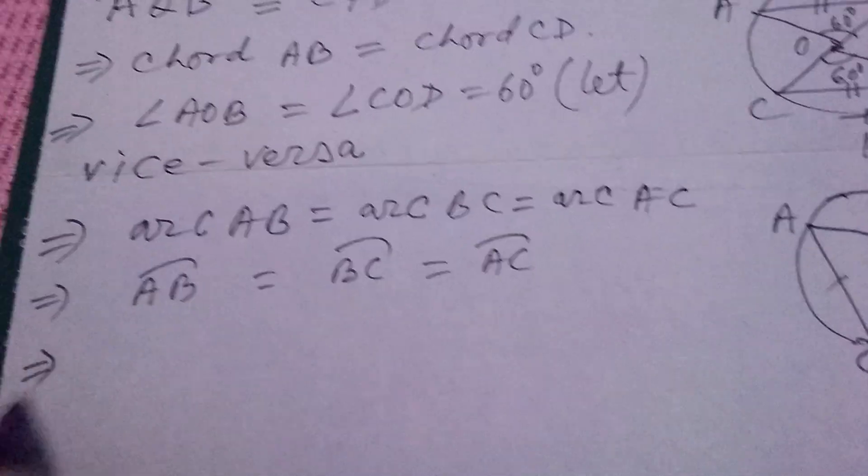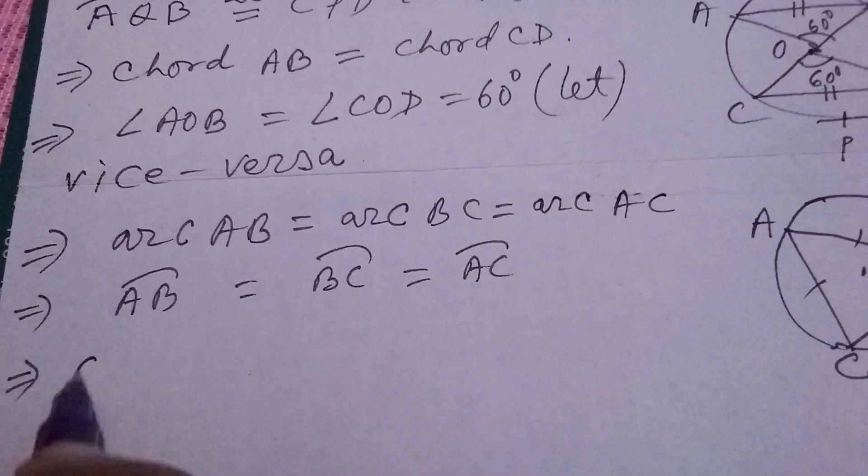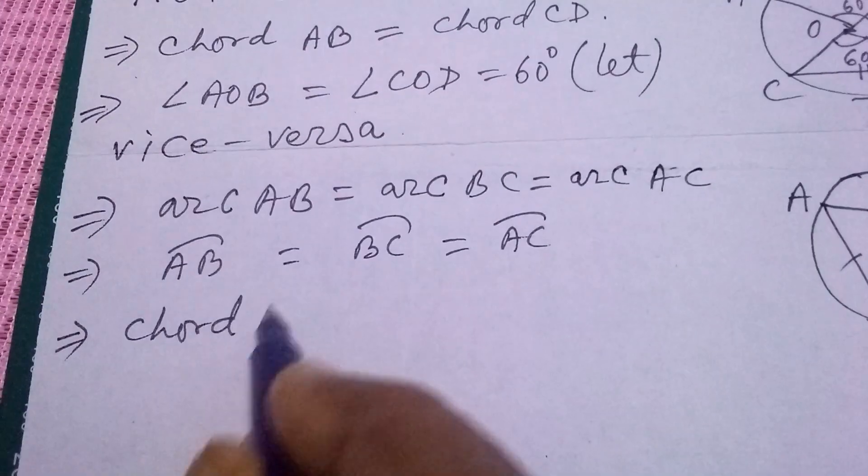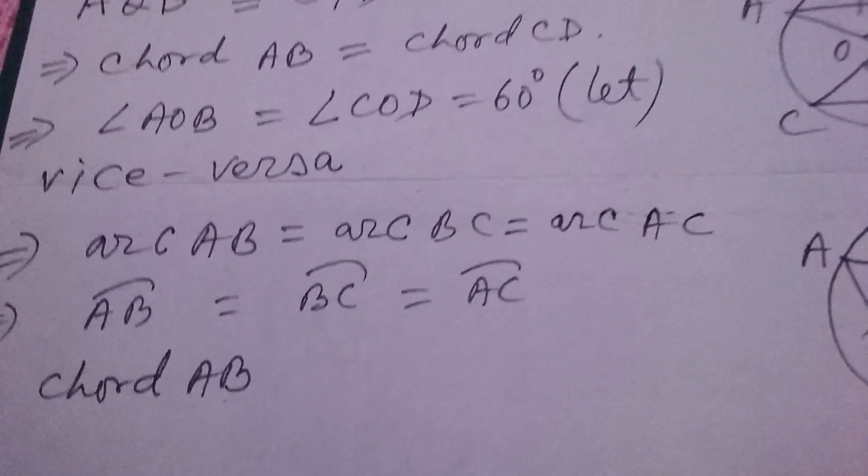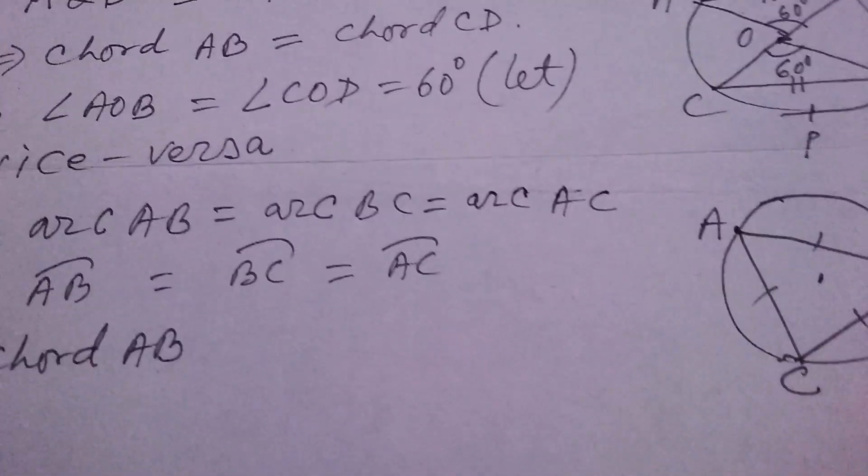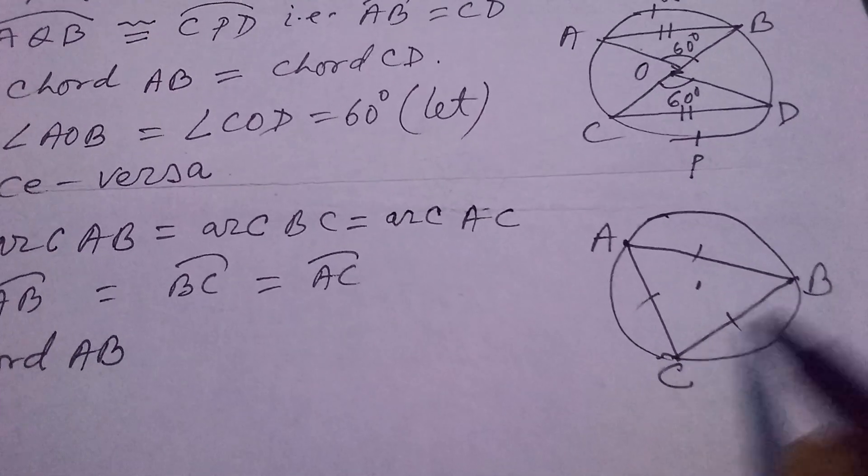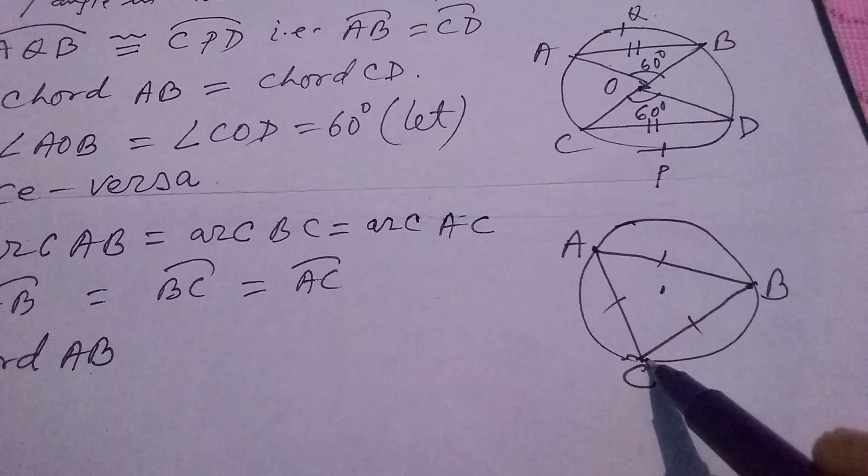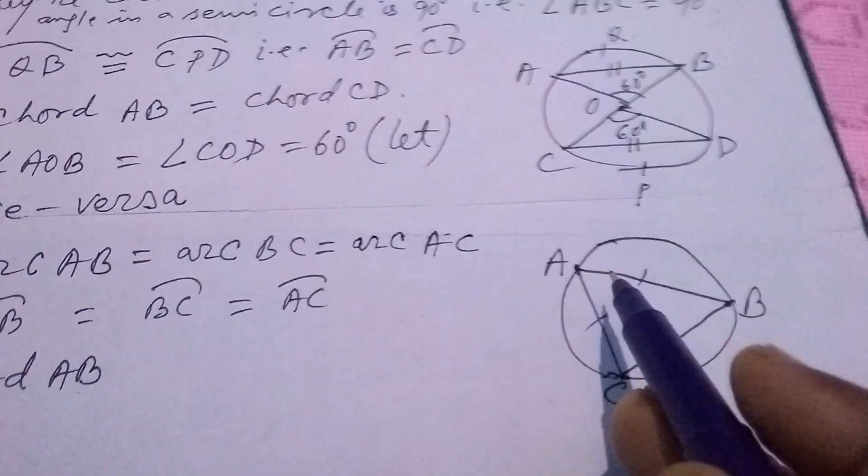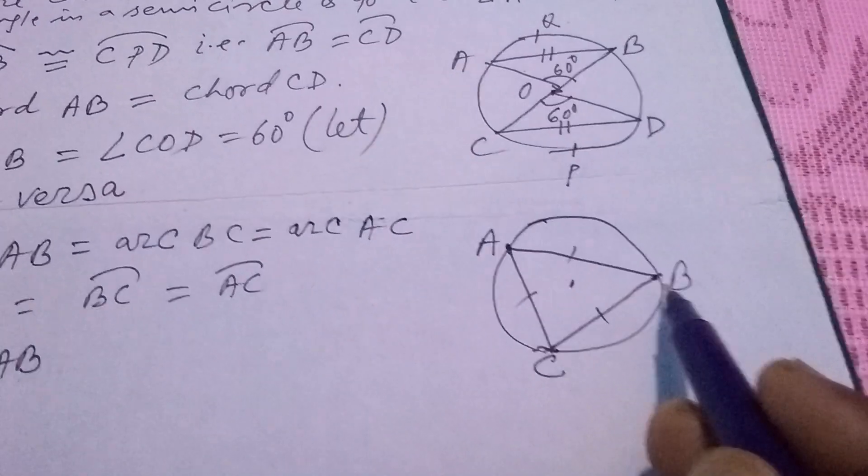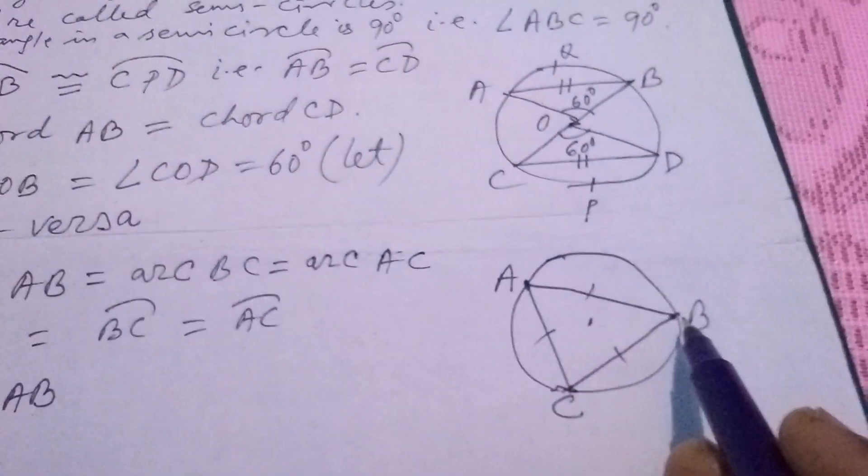Then what does this imply? This implies that chord AB, because this AB arcs, extreme point is A and B. BC arcs, B and C are the extreme points. CA arcs, C and A are the extreme points. And now, when the extreme points of an arc are joined, it forms a chord.